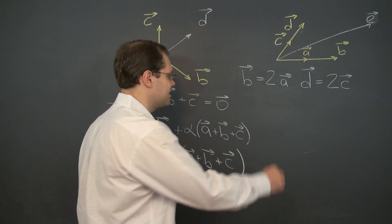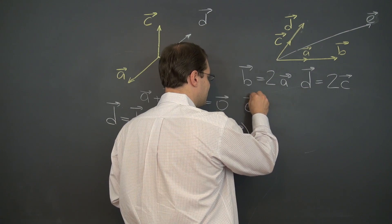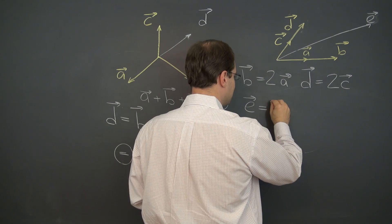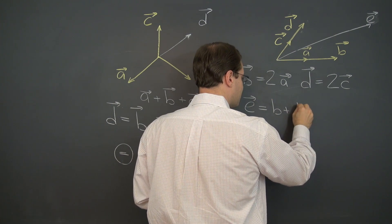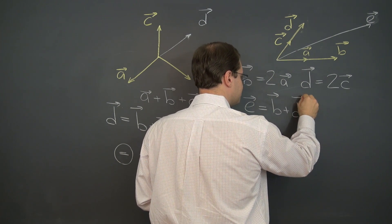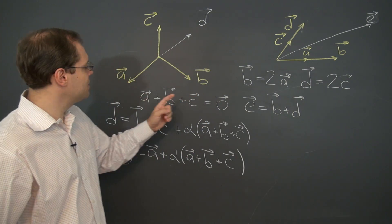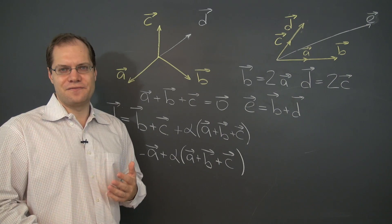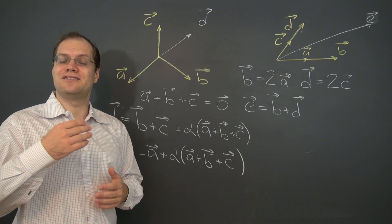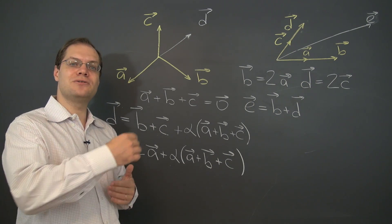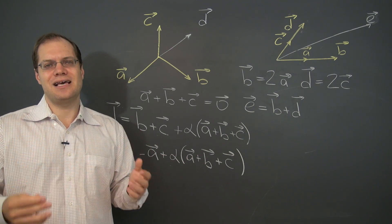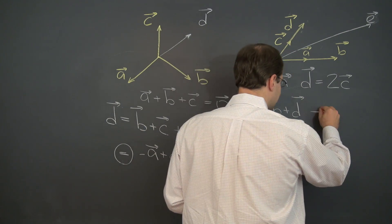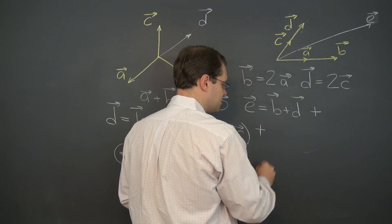So when we're expressing e as a linear combination of a, b, c, and d we have to do it in one particular way which is b plus d. Of course we could have also said 2a plus 2c, but then I would have made the same comment we did here. Yes, it's a different linear combination. Yes, it's a different expression, but eventually it will represent the same set of linear combinations. So b plus d plus, carrying it over to the next line,